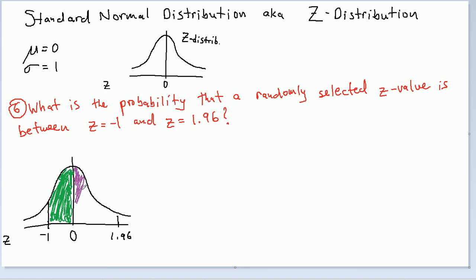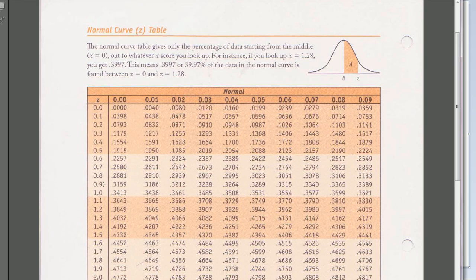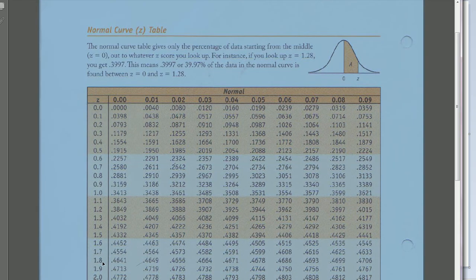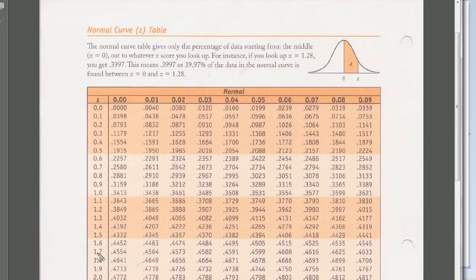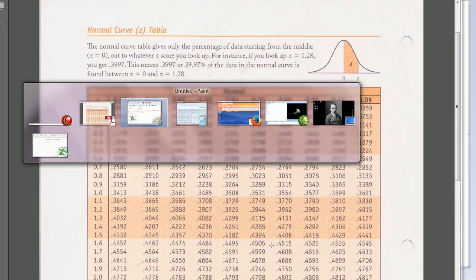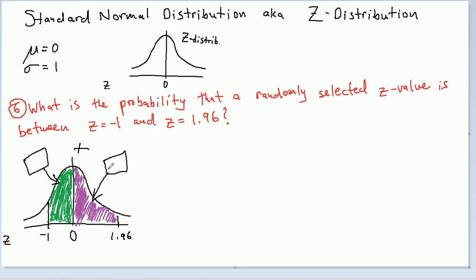So what we want is this green and purple together. If you recall the previous video, we need to get two separate things and then add the two. So we look up 1.96 — here is 1.9 and here is 0.06 — and it turns out to be 47.5%. So 0.475 is the purple region.